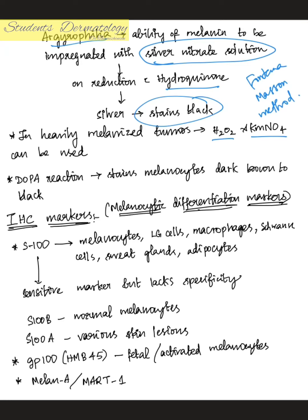In heavily melanized tumors the pigmentation is very high and may obscure normal visualization of melanin; hence strong oxidizing agents like hydrogen peroxide and potassium permanganate are used. The DOPA reaction stains melanocytes from dark brown to black.